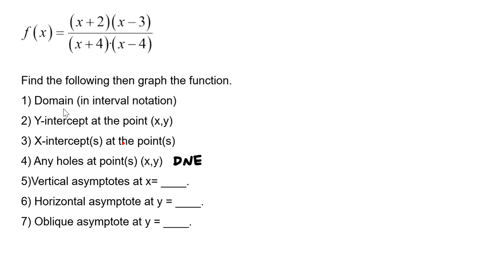We can answer the domain pretty easily because we know we can't divide by 0. So if we set each of the factors in the denominator equal to 0 and solve, we'll find the values that need to be excluded from the domain and also the values that we'll use to make the equations of our vertical asymptotes. So we can now answer number 1 and number 5 by setting x plus 4 equal to 0 and solving.